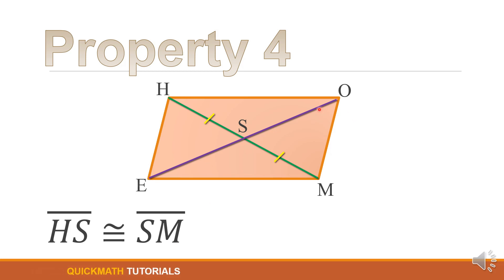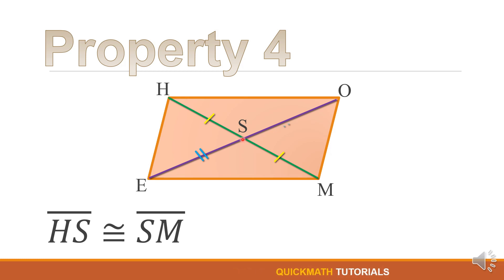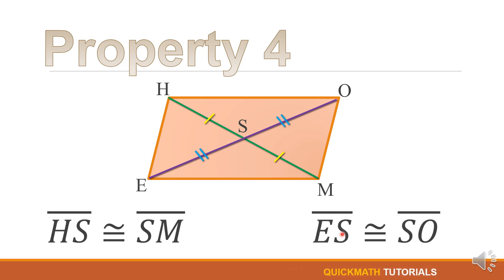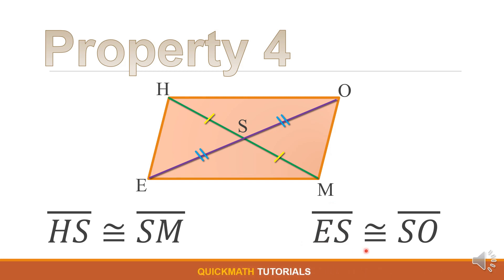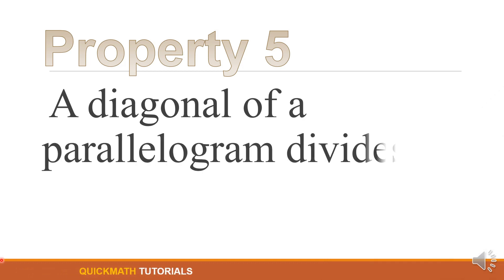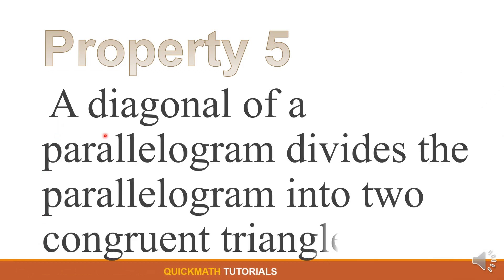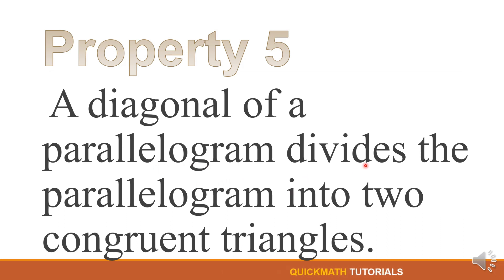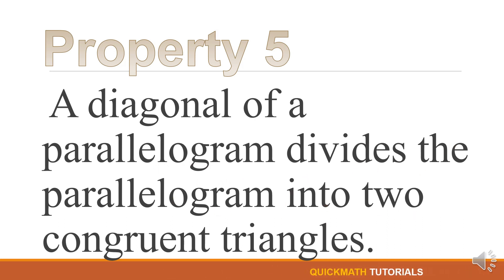For the other diagonal, we have: line segment ES is congruent to line segment SO. For our last property: a diagonal of a parallelogram divides the parallelogram into two congruent triangles.